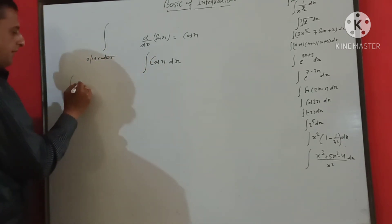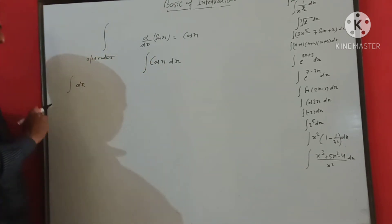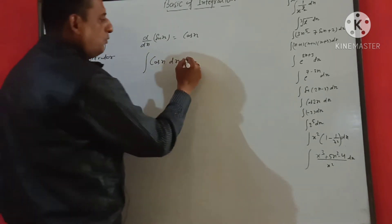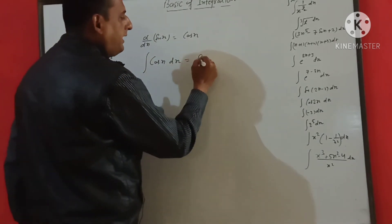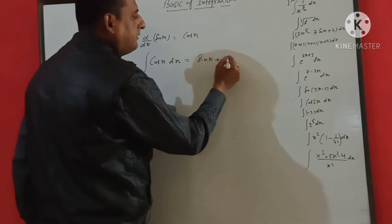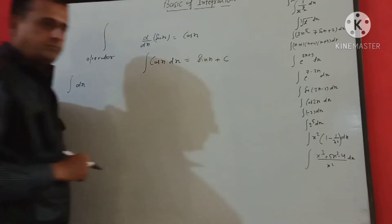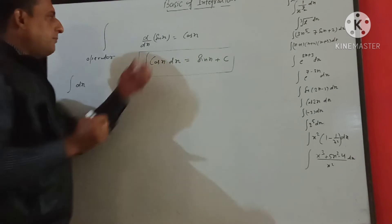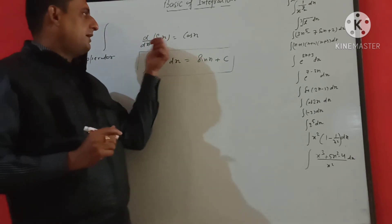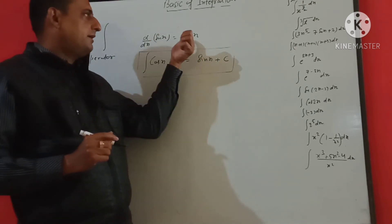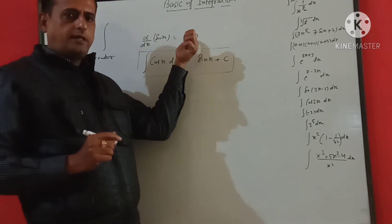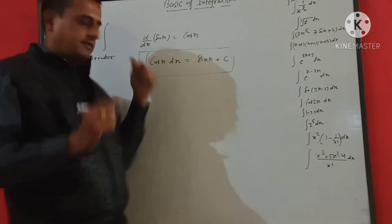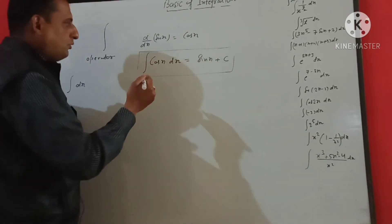Integration and dx — when we do the integration of cos x, we will find sin x plus C. So if sin x differentiation is cos x, and we take the integration of cos x, we will find sin x plus C.